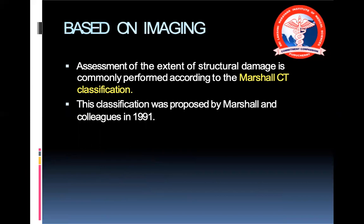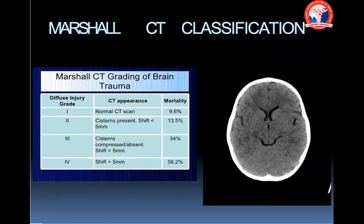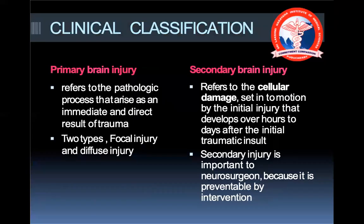Based on imaging, the Marshall CT classification is used for diffuse injury and can be classified into four grades. Grade 1 shows a normal CT scan. Grade 2 has cisterns present but a shift of less than 5 mm. In Grade 3, the cisterns are compressed or absent and the shift is more than 5 mm. In Grade 4, the shift is more than 5 mm and it is associated with increasing mortality rates.